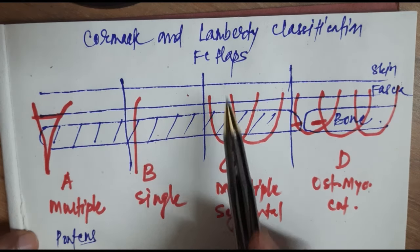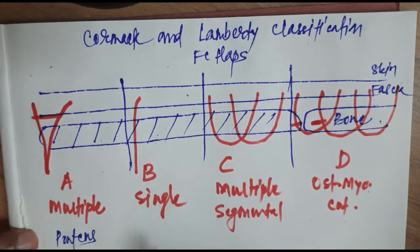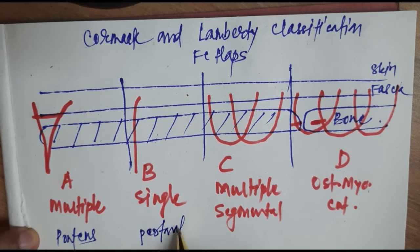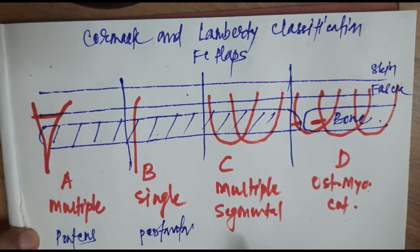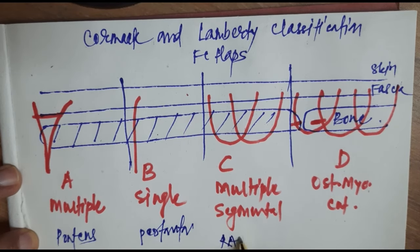Type C has multiple segmental perforators. Here we can assume that a single perforator flap is there at the base. So perforator flaps are examples of type B. Type C is multiple segmental perforators. Radial artery forearm flap comes into this.